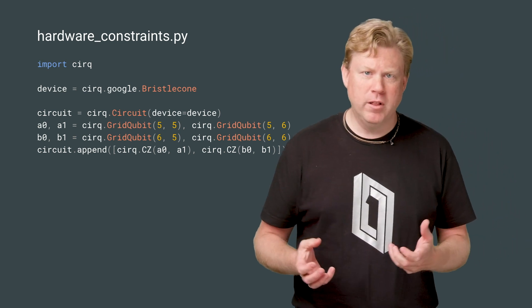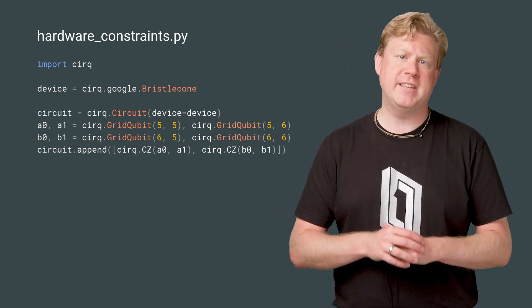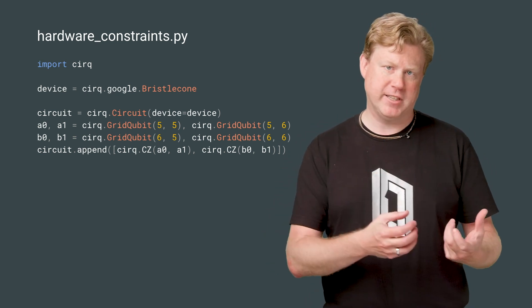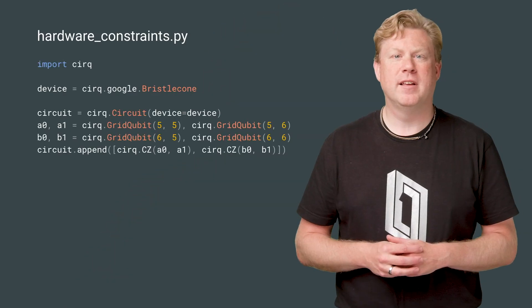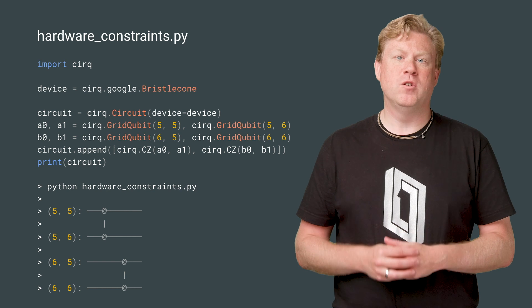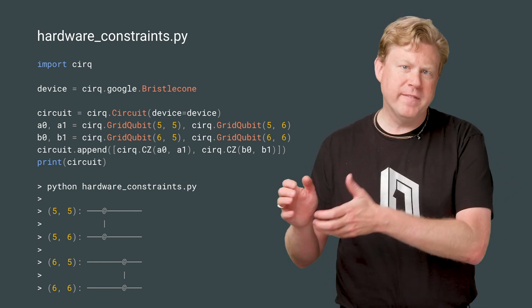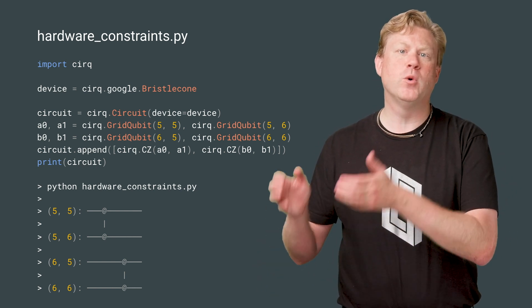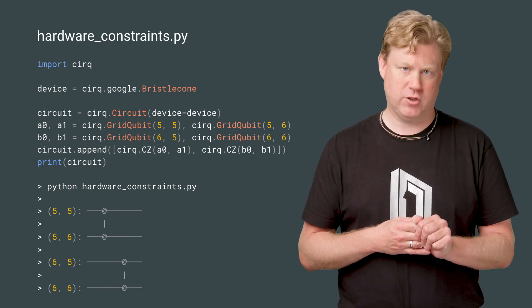For example, here we try to perform two two-qubit CZ gates at the same time on adjacent qubits. But because we have passed in the device object to the circuit, it is aware of the Bristlecone constraint. And when we print out the circuit, we see that the circuit has correctly moved one of the CZs to a later time slice in order to avoid violating the constraint.